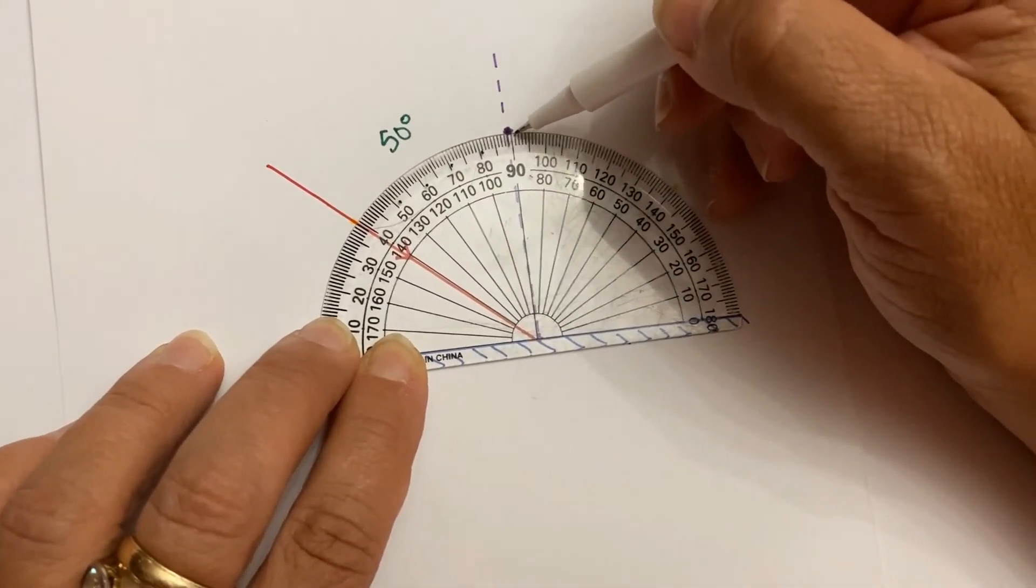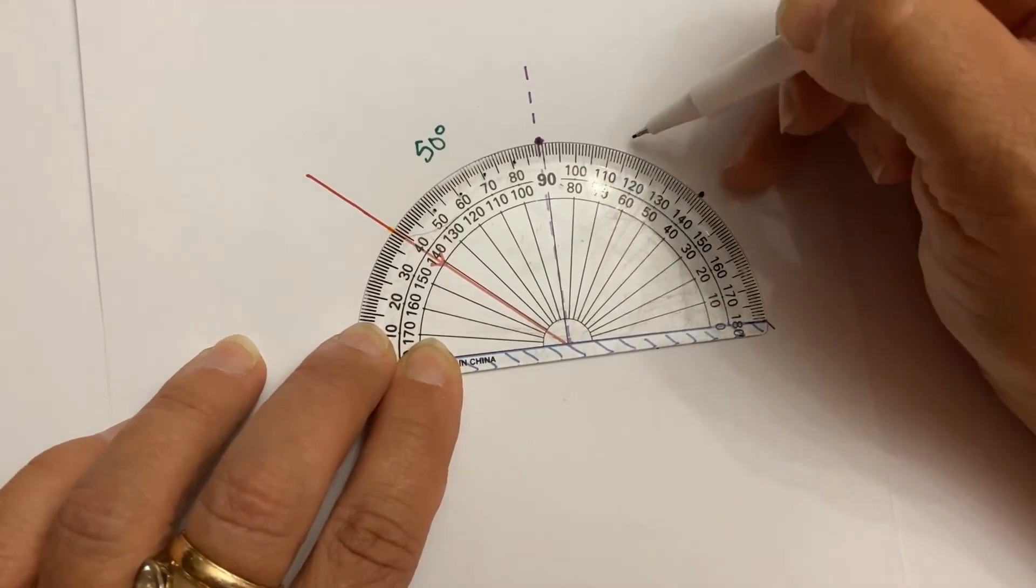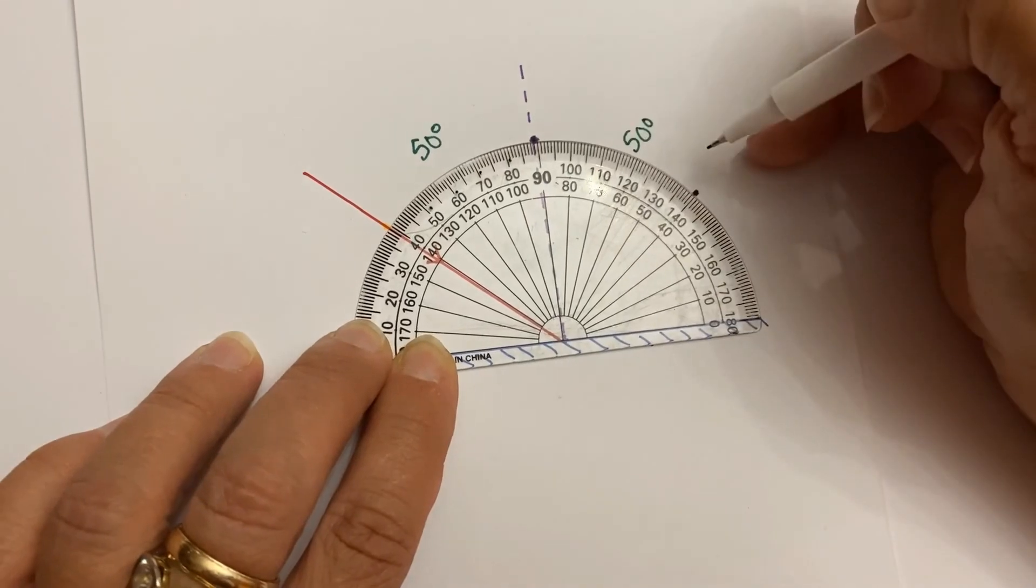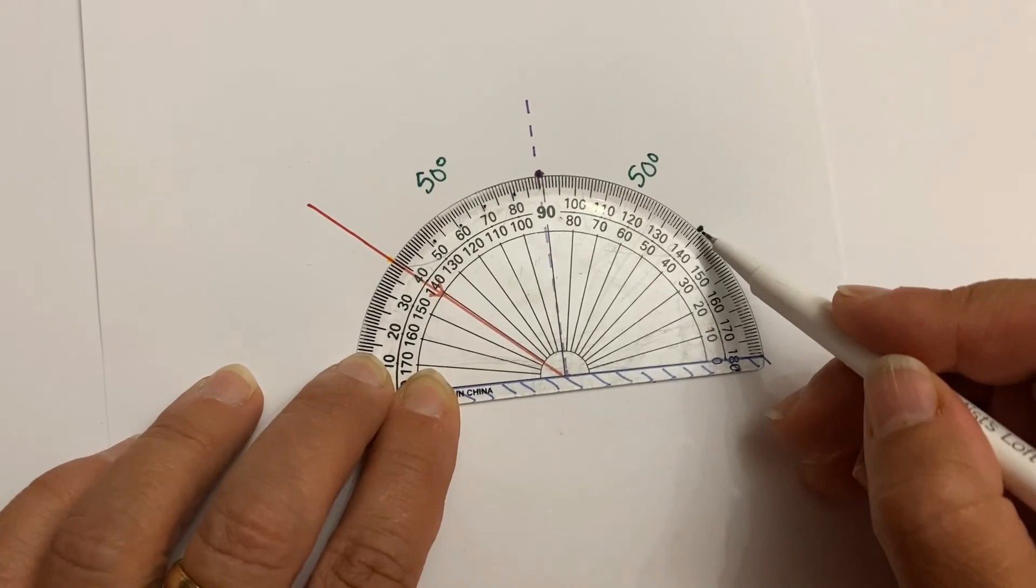So on the other side, we're going to count the same thing. 10, 20, 30, 40, 50. So this has to be 50 degrees. Also, our next step is to mark that angle of reflection.